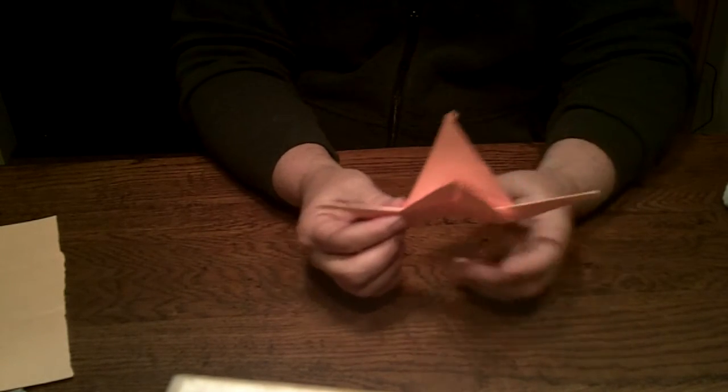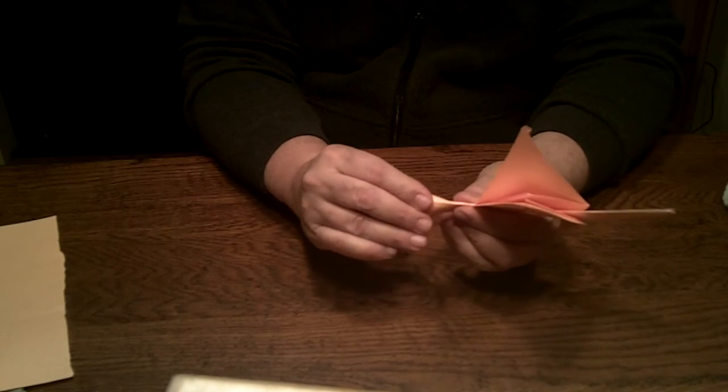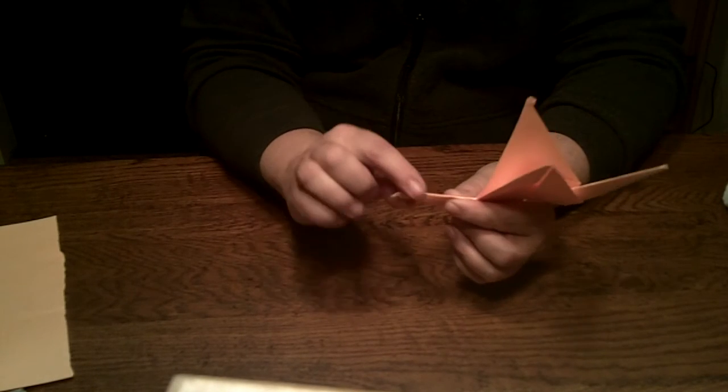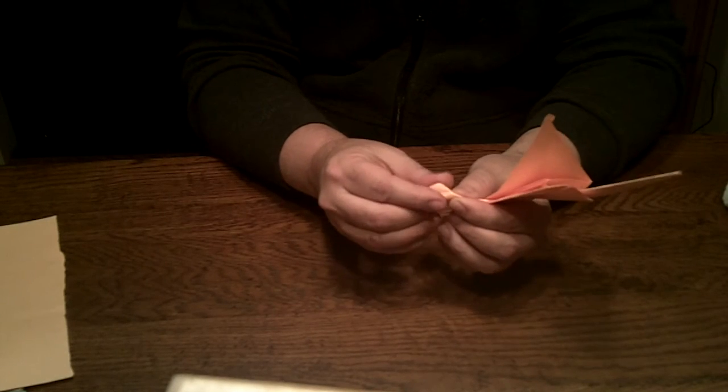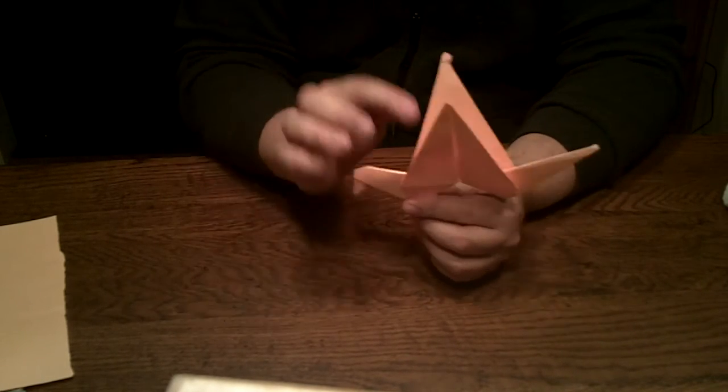So now you get to pick sides. I always pick the worst side is the head. So you come in here to the head. And you just kind of put your thumb inside and take this. Remember this is a mountain fold. And you're going to make that a valley fold. And that will become your head. So there you have a head. And you've got a bird.